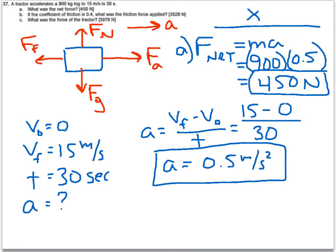Okay, so let's try part B. Part B, we're trying to find if the coefficient of friction is 0.4, what's the force of friction? Well, in order to do that, we need to find the normal force. So to find the normal force in the y direction, we're going to set up our net force equation.